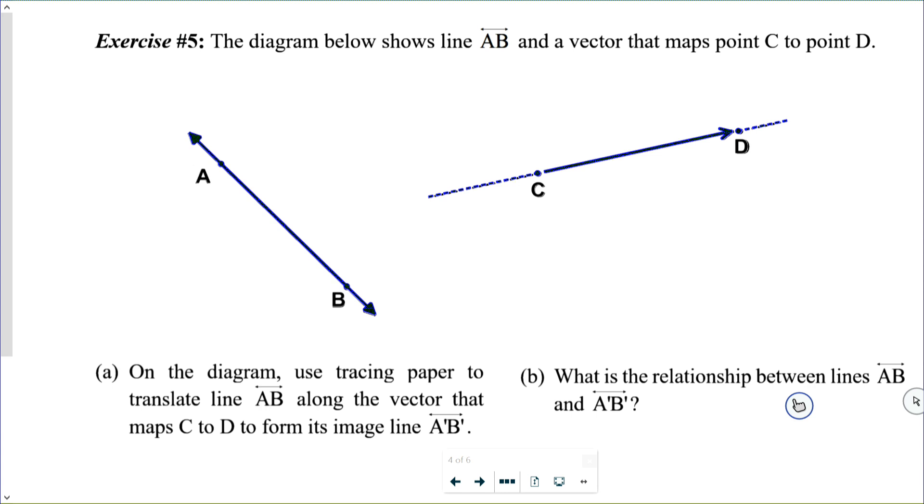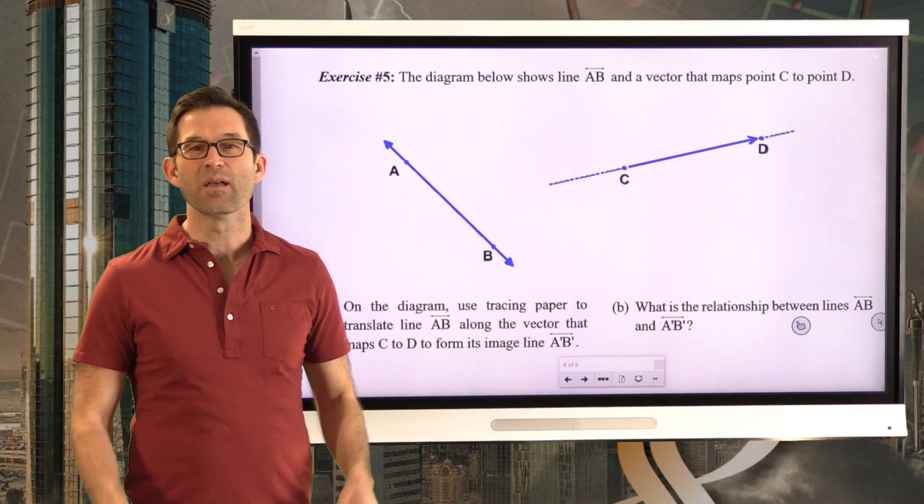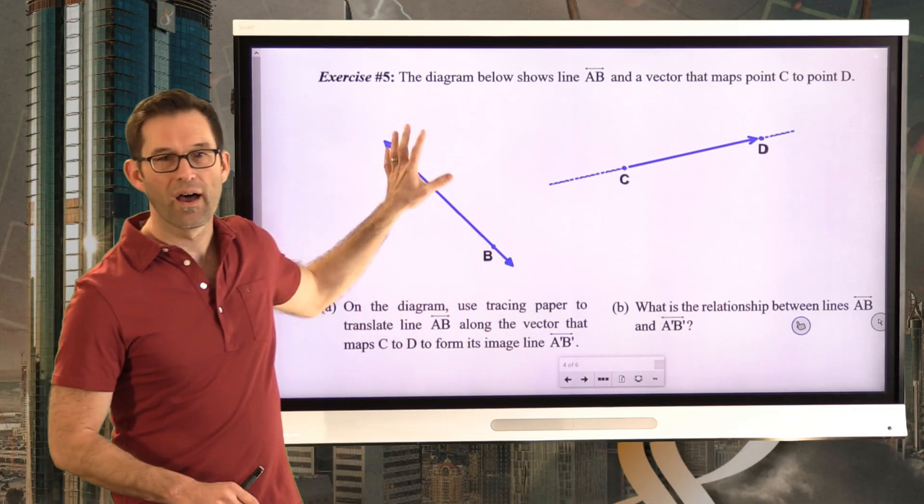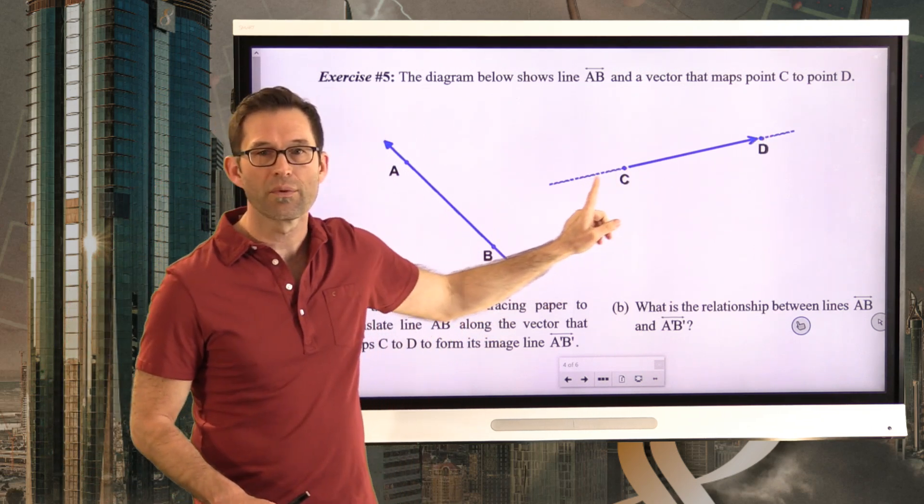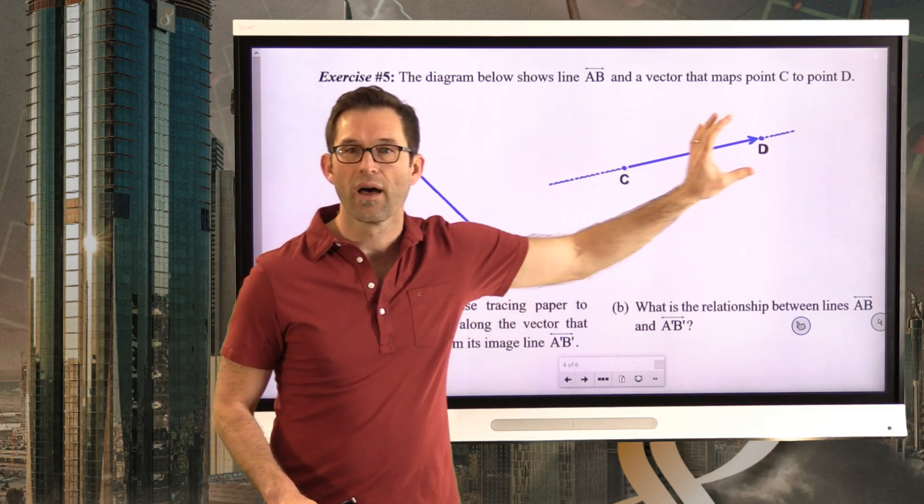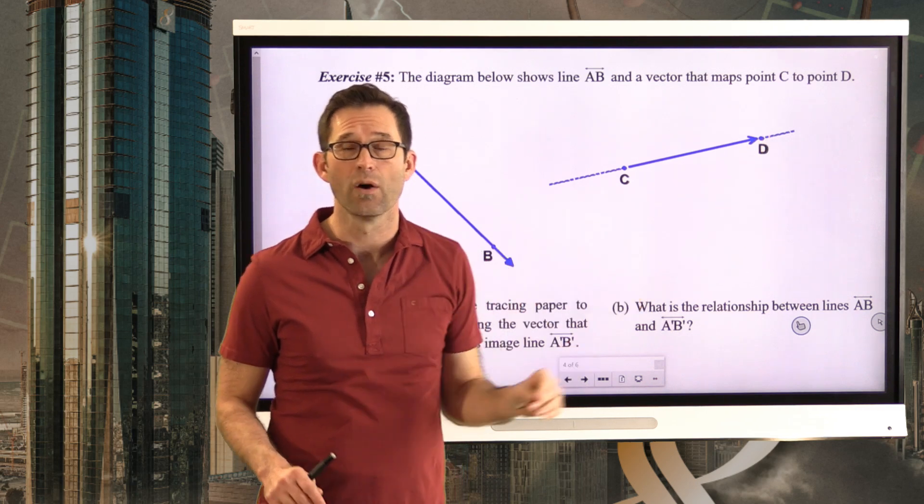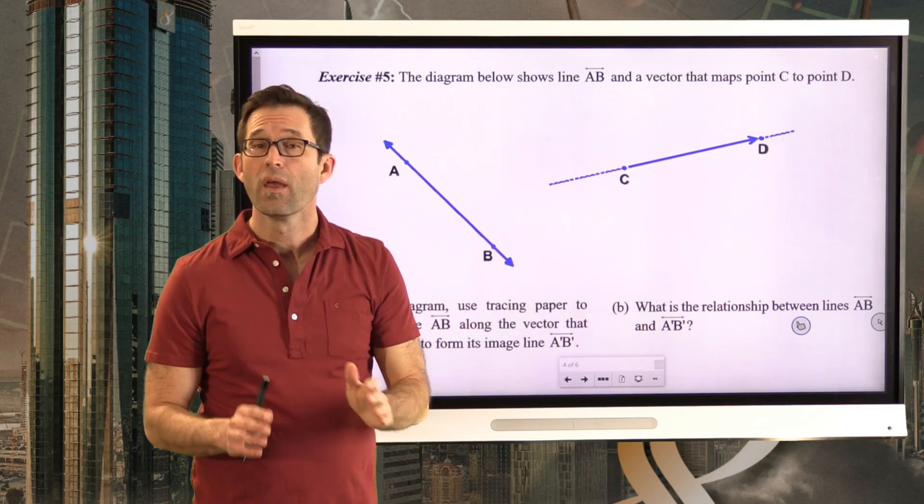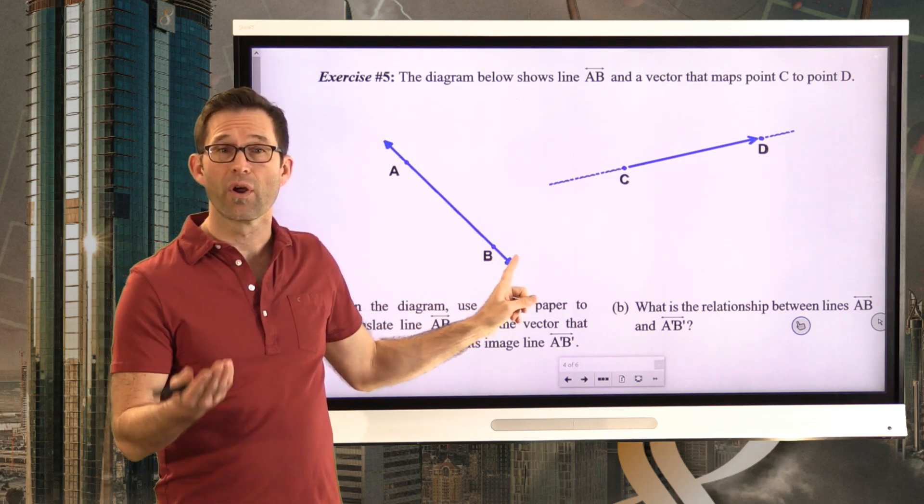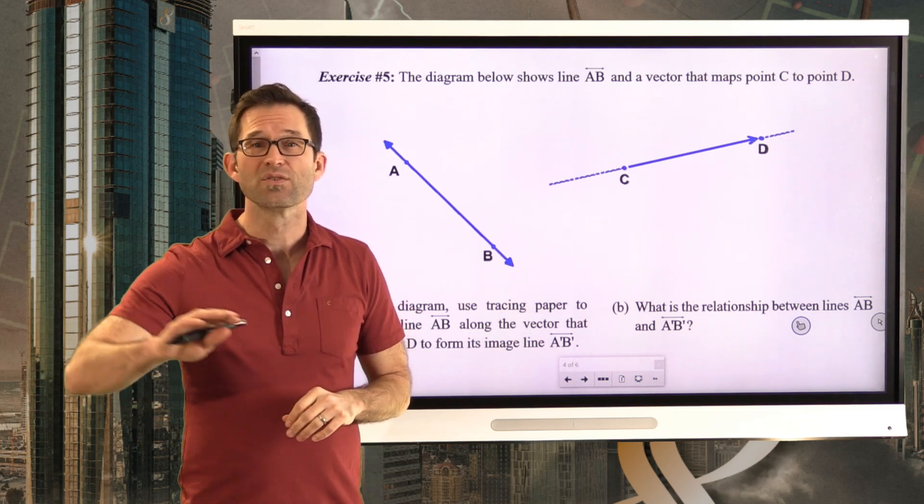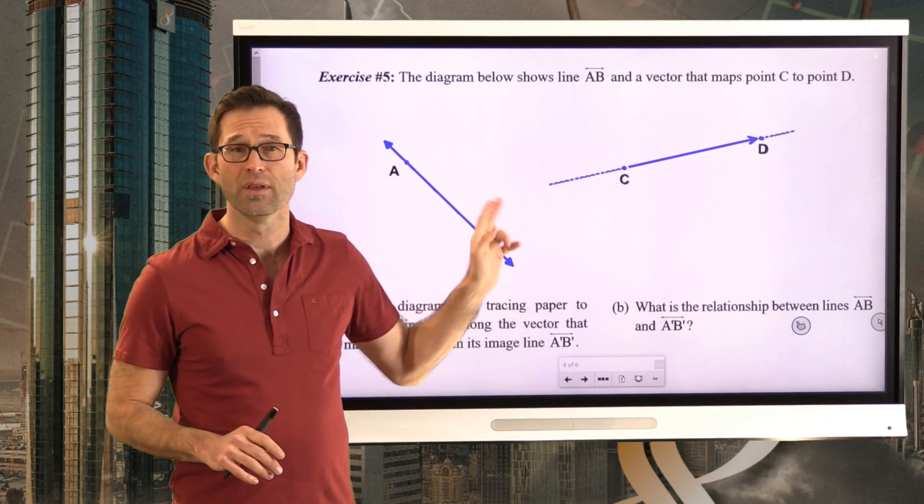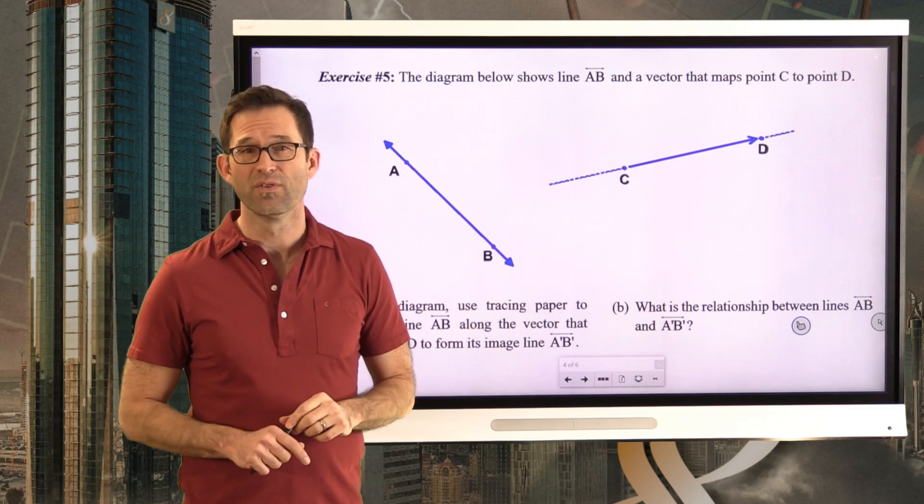Letter A, on the diagram, use tracing paper to translate line AB along the vector that maps C to D to form its image A prime, B prime. So, same thing. What I want you to do is take tracing paper, trace line AB as well as points A and point B. Trace out this vector diagram along with the extension lines. Those are helpful just so that you can, like, as you slide this thing, you can make sure to keep the line on top of itself. That keeps us all moving in the same direction. Again, I would trace AB both on the front and the back side of your tracing paper. That just makes your life a little bit easier at the end of the day and then shift the thing so that you can figure out where the image of line AB is going to end up going. Pause the video now and see if you can do that translation.